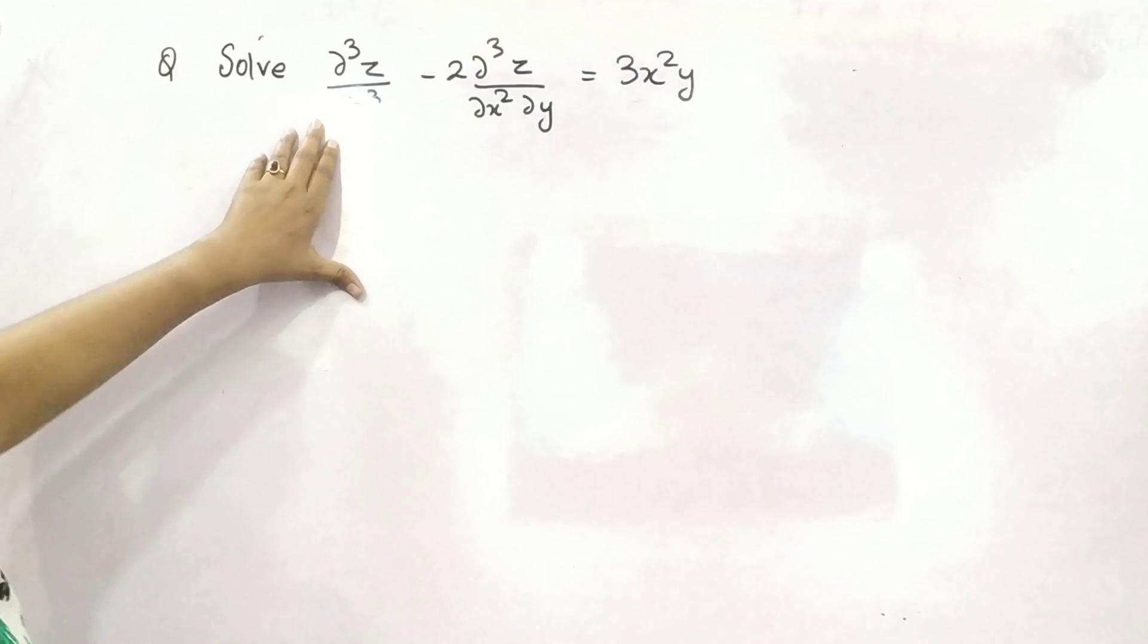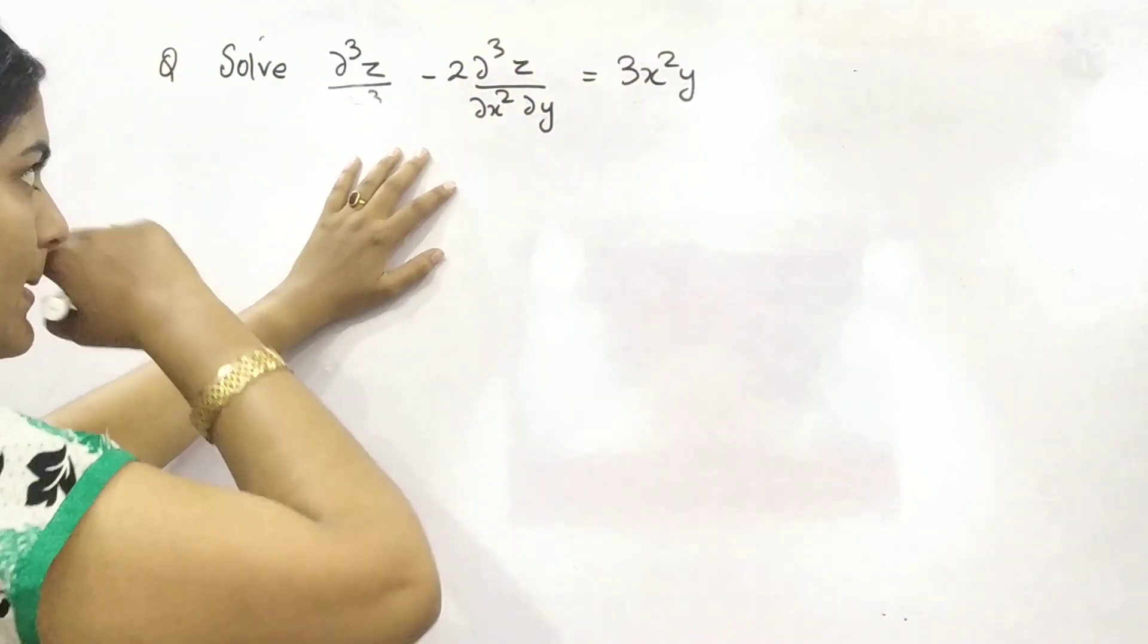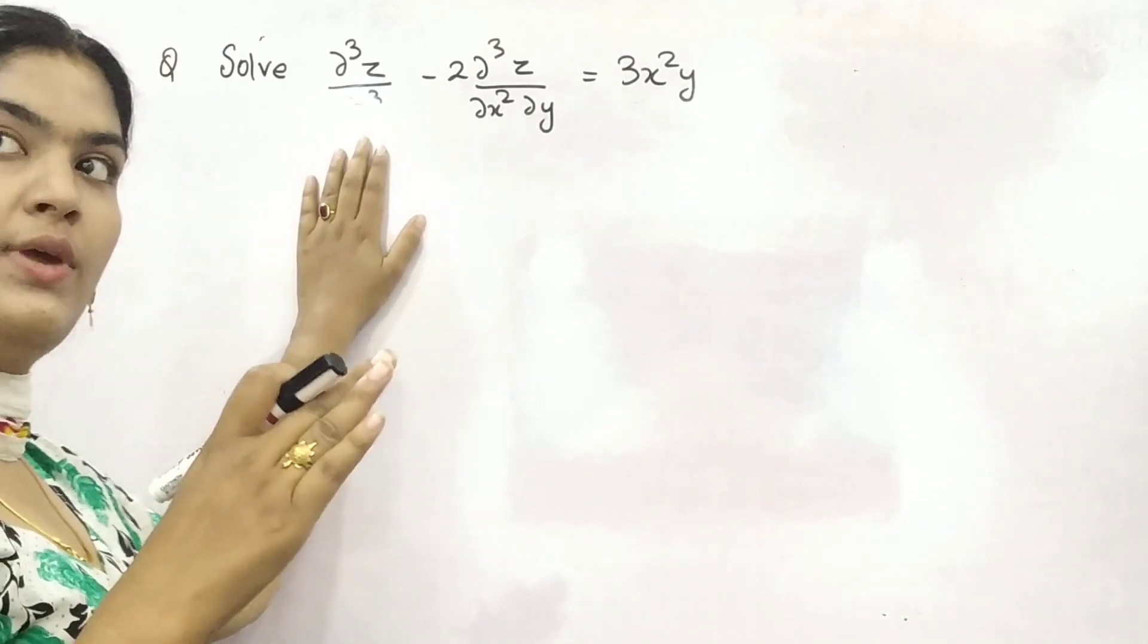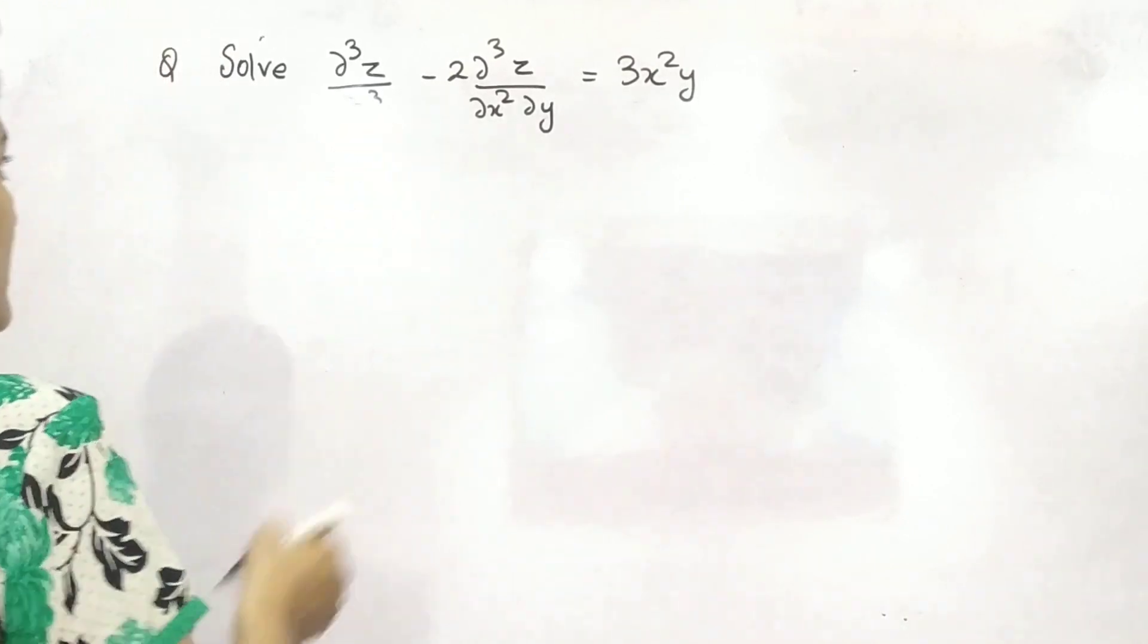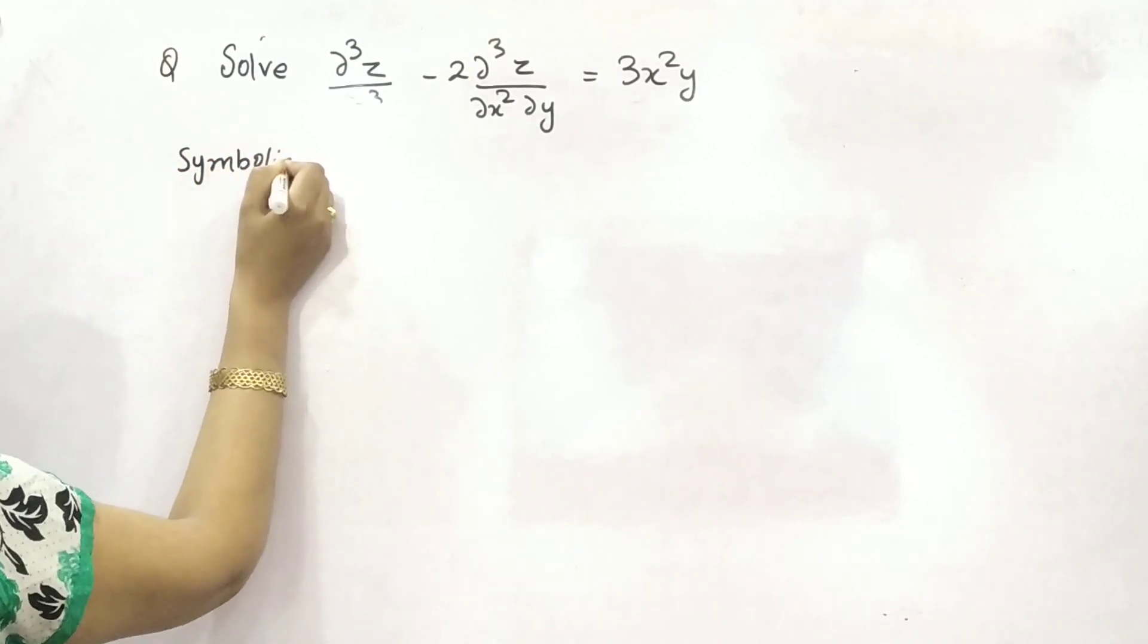Here's a question that this is cubic partial differential equation. You need to find out, you have to solve this. Then how you can solve it? First of all, make symbolic form. You know how to make it.